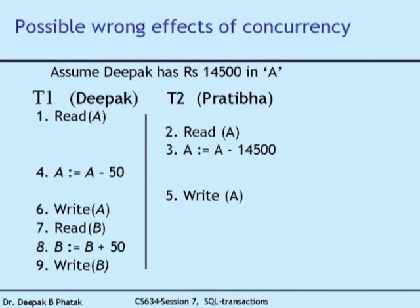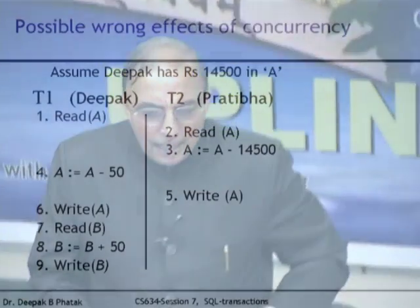Logically, the database must execute these two transactions such that either T1 executes first and then T2, or T2 executes first and then T1. If T2 executes first and drains the account to 0, then T1's 'A - 50' becomes untenable with 0 rupees — this transaction would give an error. This is a case where both transactions in that sequence could not have executed — only the first one would execute, the second would not.